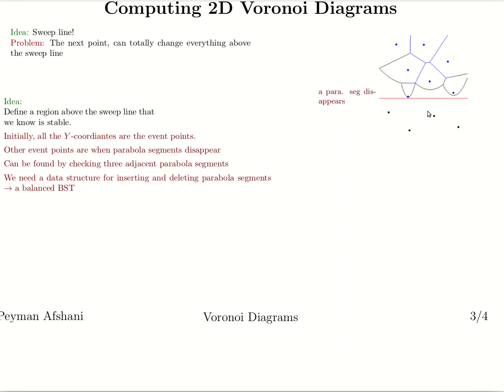The running time of this algorithm is O(n log n). This is because we need O(log n) per event point, and the total number of event points is linear, since the size of the Voronoi diagram is linear — as was proved in the previous video.